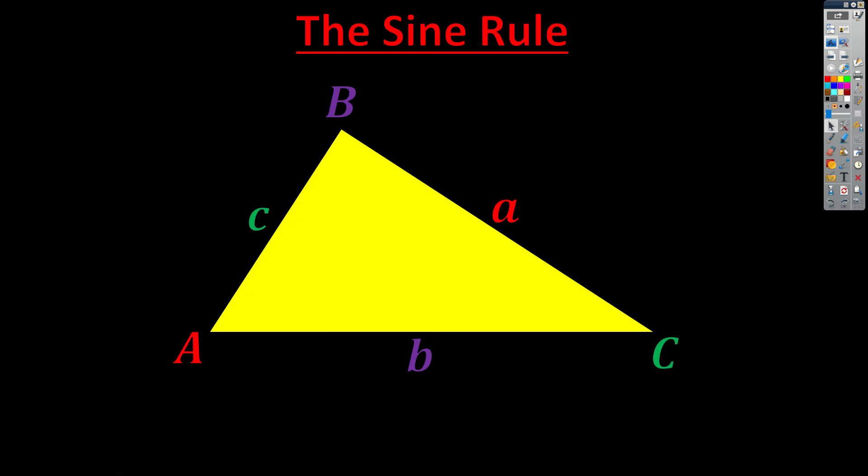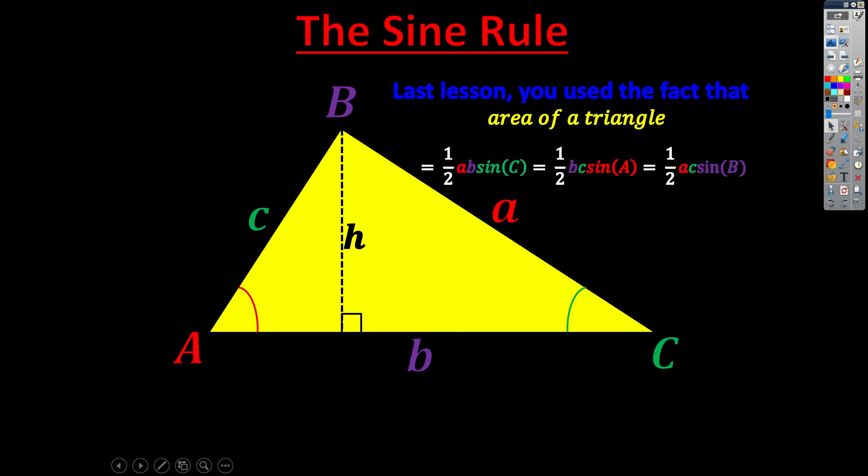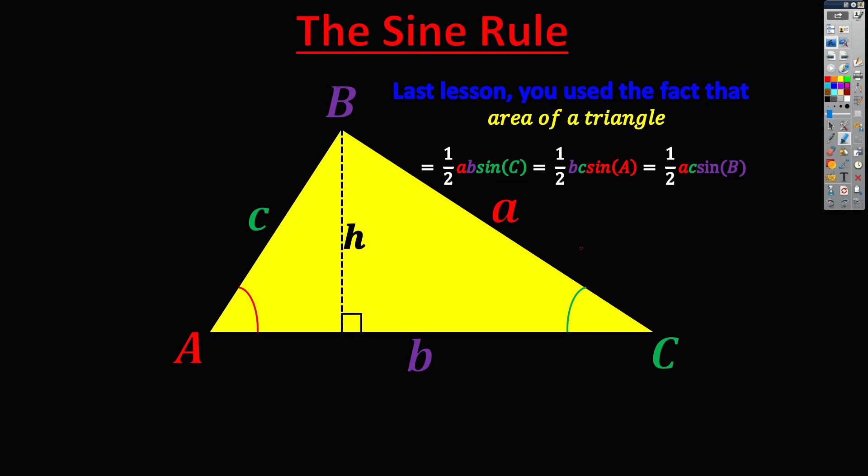And then we're going to remember that in our previous video, we showed that the area of this triangle, by using the height, was given that the area is a half AB sine C, which is using one of the three SASs that you can have in this triangle. That's going to be a half AB sine C.